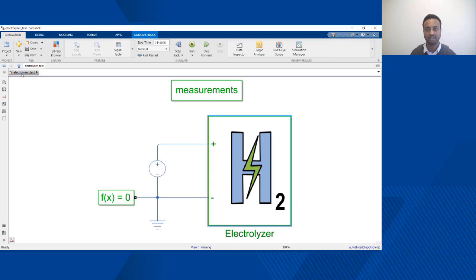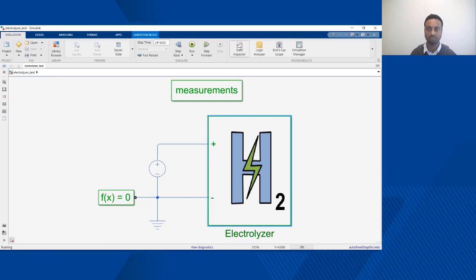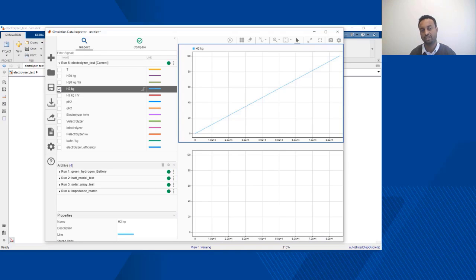Once the detailed electrolyzer is implemented we can run simulations to understand and investigate its detailed operational performance. For example we can use our data inspector to look at the amount of hydrogen that we were able to capture for a given input voltage and then run multiple simulations to compare how much performance we can get for increasing or decreasing the input voltages.